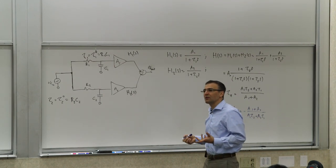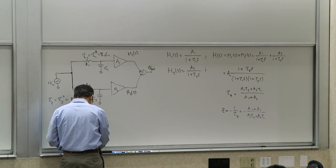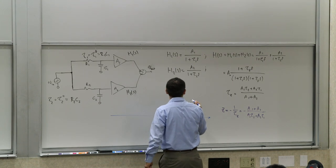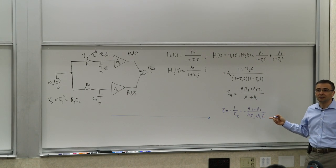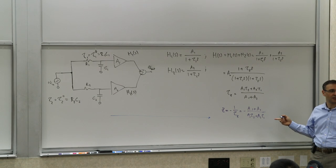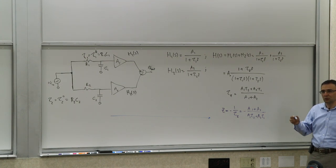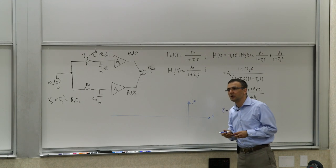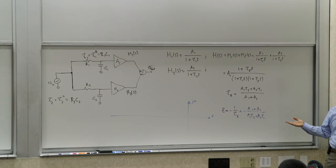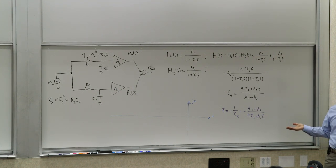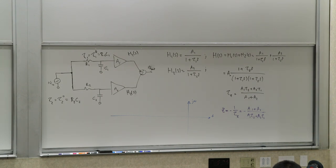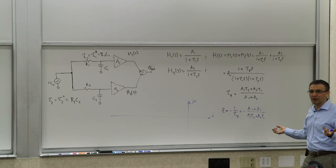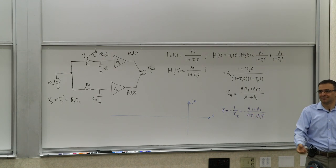The zero is going to be real. One way to see this: all time constants and gains are real. Another way: for a real system, you cannot have a single complex zero — they come in complex conjugate pairs, so if there's only one zero, it must be real. The two poles p1 = −1/tau1 and p2 = −1/tau2 are fixed; only the zero moves.